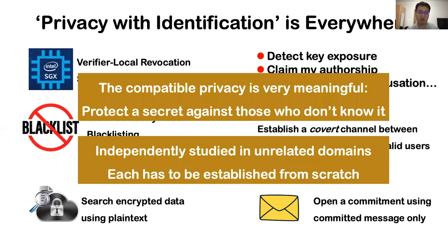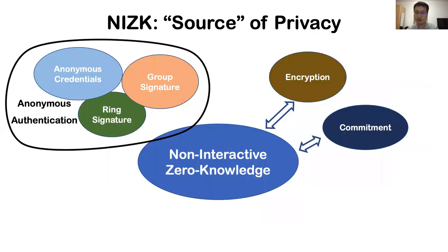From a takeaway point of view, these primitives are popular because the compatible privacy is philosophically meaningful — it's protecting a secret against those who don't know it. However, although these primitives are conceptually close, they were independently studied in many seemingly unrelated domains and lacked a unified view. Each had to be established from scratch, and some of them indeed face difficulties in design. This is not the case for achieving privacy alone. We have a fundamental primitive, non-interactive zero knowledge (NIZK), which is considered to be a source of privacy. NIZK is the core of many anonymous authentication schemes and can also be applied to enhance the security of many other fundamental primitives like encryption and commitments.